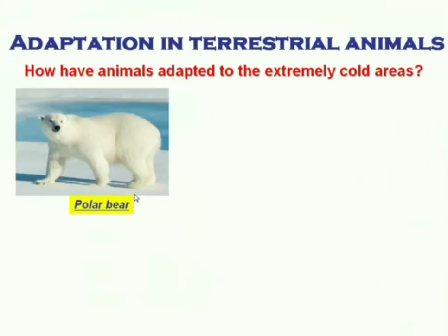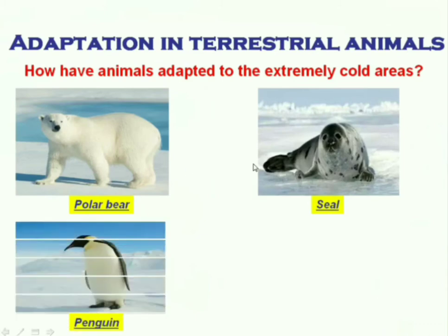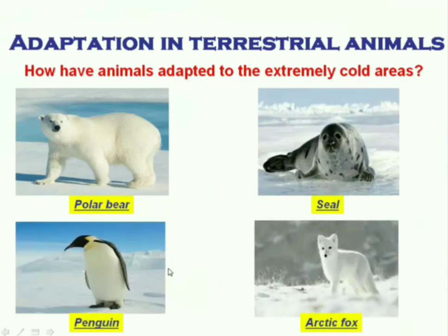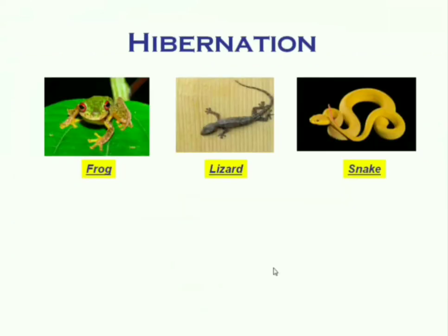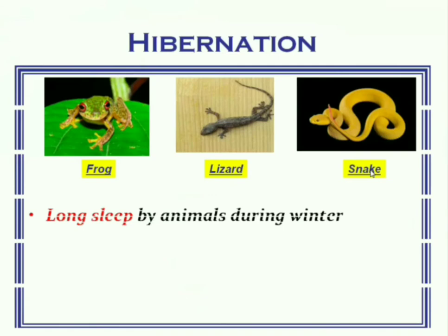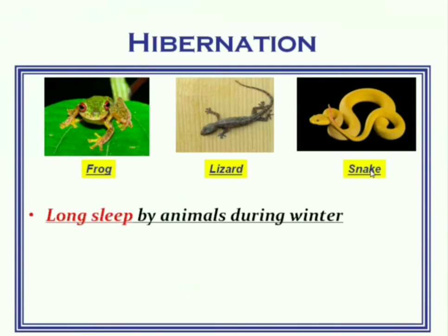Animals living in extremely cold areas, such as polar bears, seals, penguins, and arctic foxes, have thick fur on their bodies which protects them from the chilling cold. Some land animals like frogs, lizards, and snakes cannot tolerate cold, so they hide themselves in warm places and show very little activity. This long sleep during winter is called hibernation.